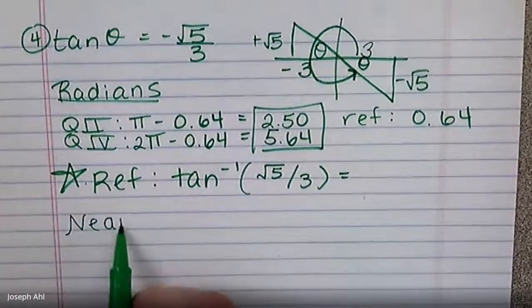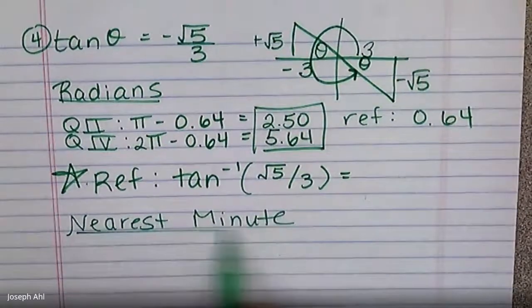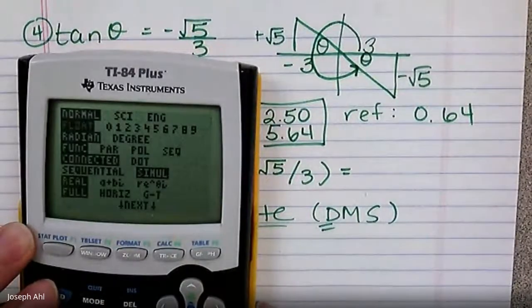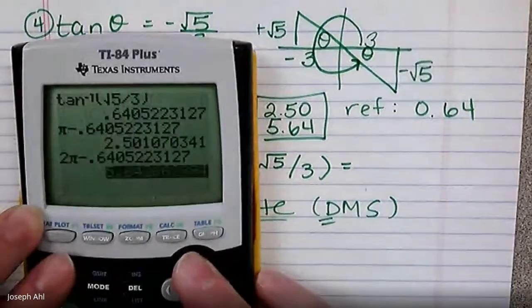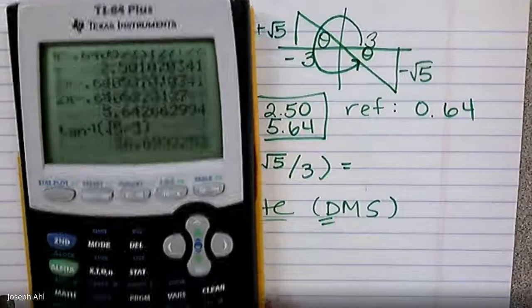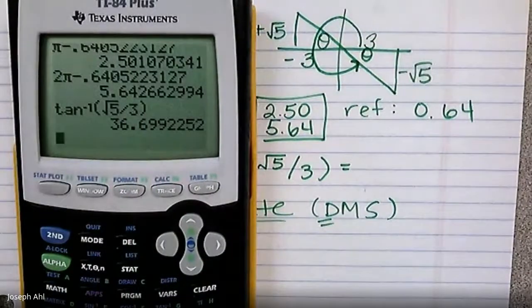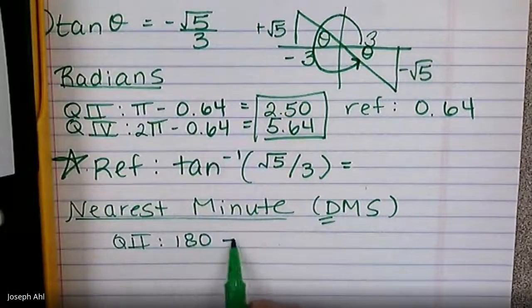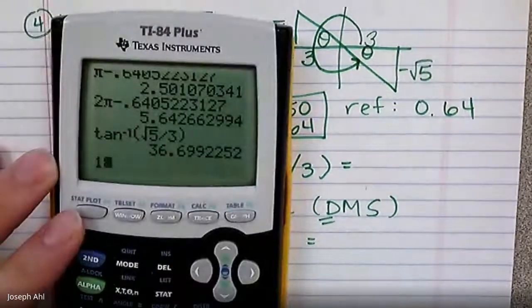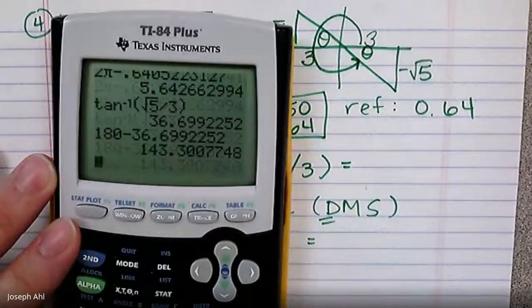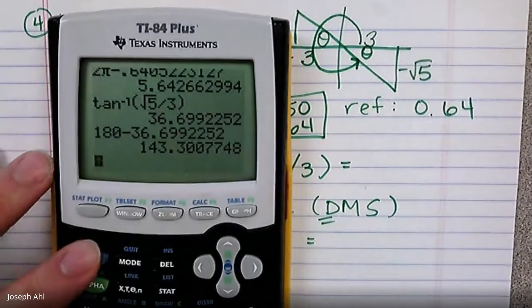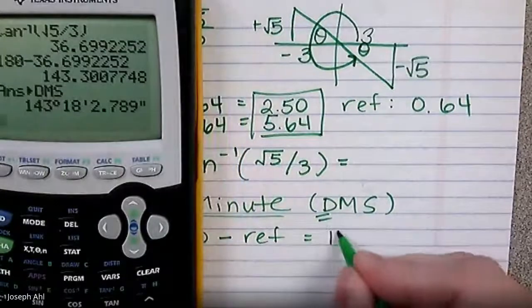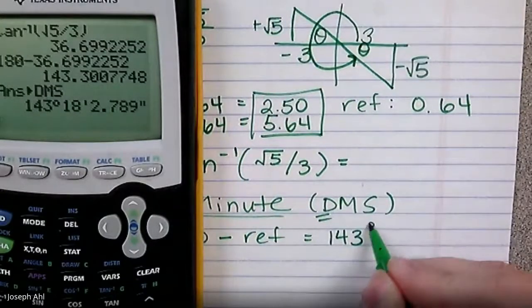Let's do just one more where we go to the nearest minute again, just to get practice with that on the calculator. When we say nearest minute, we got to be back in degree mode. So just really quickly, change your mode to degrees. You got to type in tan inverse of radical five over three again, because now we're in degree mode. We have a new reference angle. It's about 37 degrees. In quadrant two, how do I get the answer? It's 180 minus the reference angle. So 180 minus this reference angle is 143.3 dot dot dot. Let's do second apps, convert it to degrees, minute, seconds. It's 143 degrees and 18 minutes. It would not round up to the next minute, so 143 and 18 minutes.